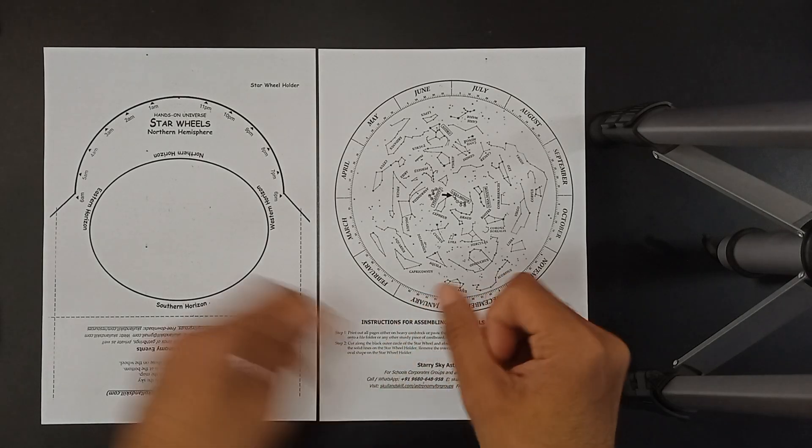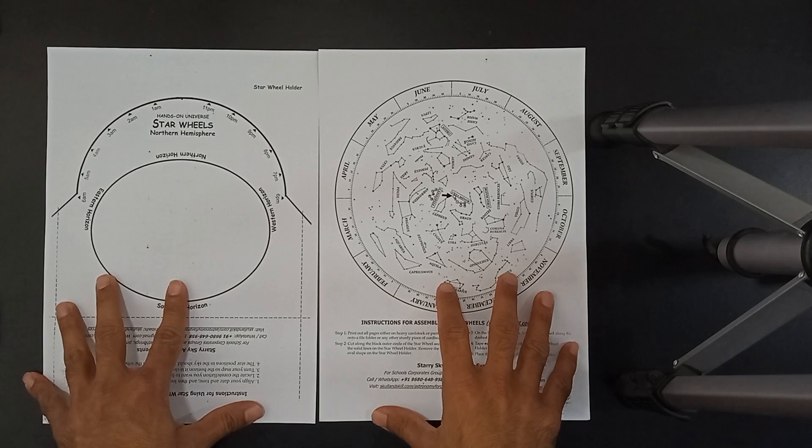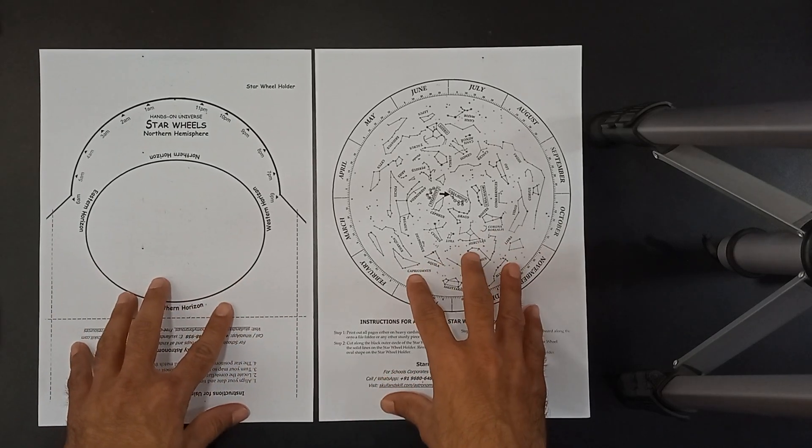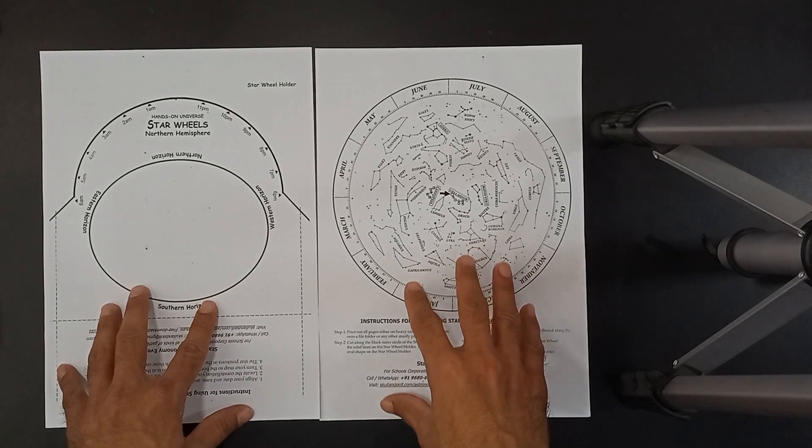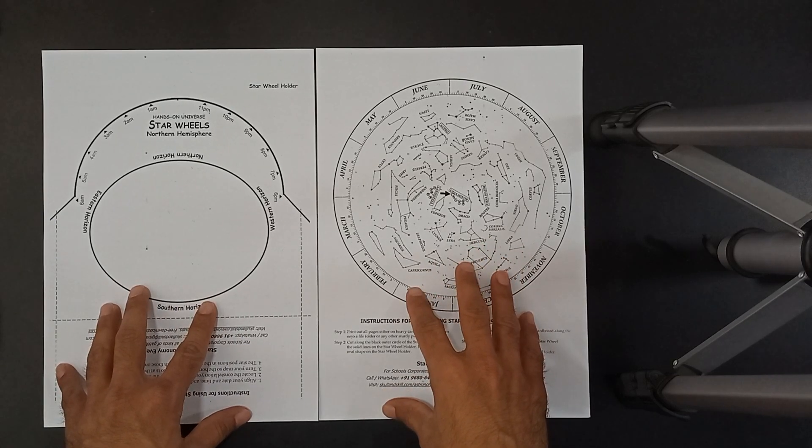Hello everyone. Today in this video we are going to see how to make a planisphere. Planisphere is a tool which you can use to track stars in the night sky, track constellations.